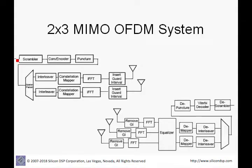Here we have a stream of bits coming into a scrambler, and we have a convolutional encoding block — for example a half-rate encoder — then you go through the puncture. At this point we have binary data which is then passed through a parser which takes the bitstream and splits it into two bitstreams, each at half the data rate of the original.